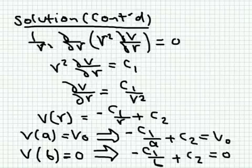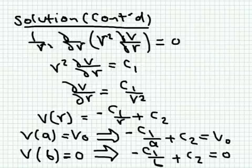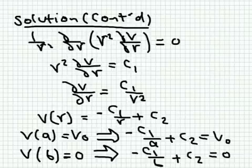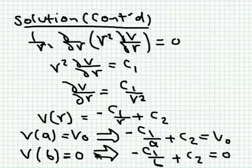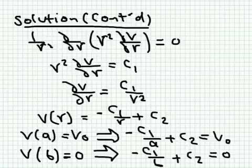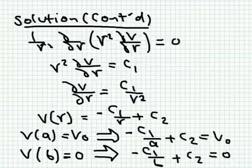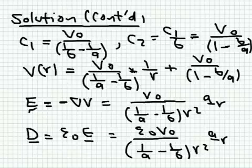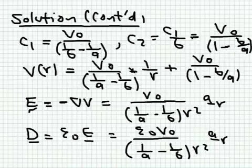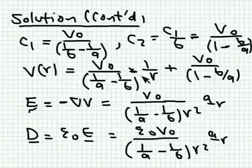Laplace's equation in spherical coordinates is: one over r squared times partial over partial r of r squared times partial V over partial r equals zero. Integrating gives V as a function of r: V equals minus C1 over r plus C2. Applying boundary conditions — V equals V_0 at r equals a and V equals 0 at r equals b — gives two equations. Subtracting them eliminates C2, allowing us to solve for C1 equals V_0 over (1/b minus 1/a), and then C2 equals C1 over b.